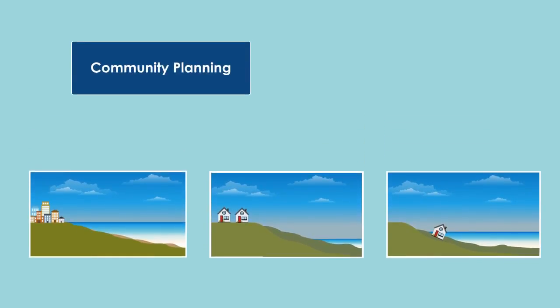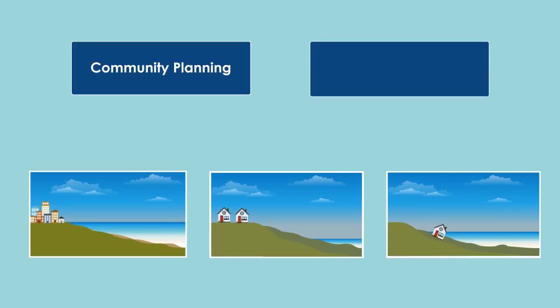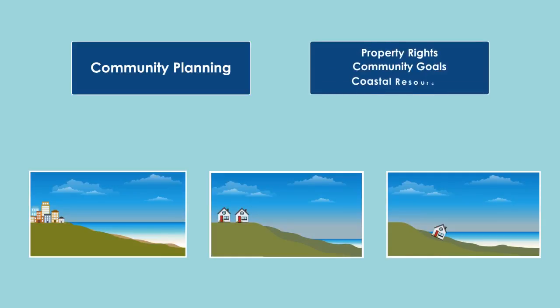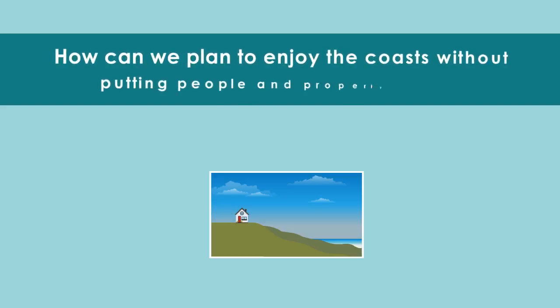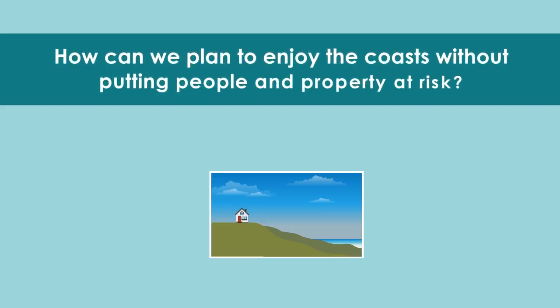Community planning is a tool to help identify assets and risks, and shape coastal development to consider private property rights, community goals, and coastal resources, without undertaking expensive engineering studies. How can communities plan to enjoy the coasts without putting people and property at risk, given the uncertainties of future lake-level fluctuations and increasing storms?